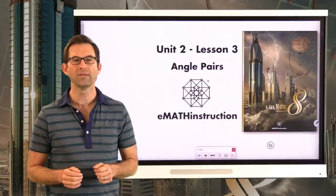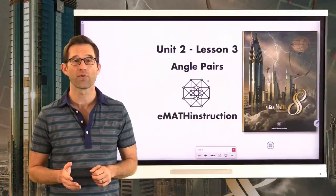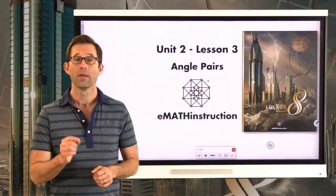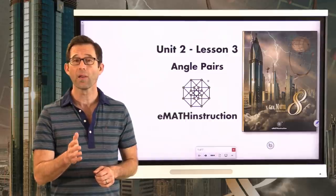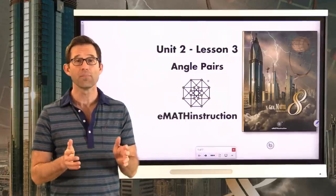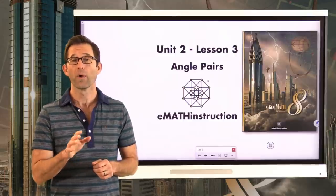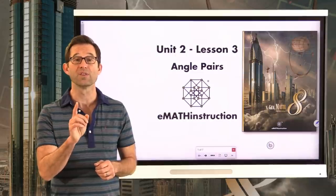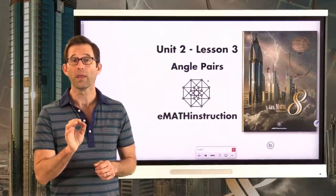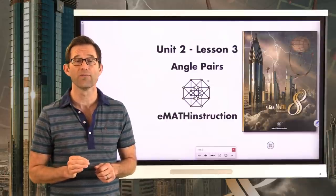Hello and welcome to another NGen Math 8 lesson by EMath Instruction. My name is Kirk Weiler and today we're going to be doing Unit 2, Lesson 3 on Angle Pairs. In the last lesson we defined what an angle was — two rays put together that have a common starting point. We also saw how to name angles, using that starting point as the vertex, either with a single letter or three letters. We're going to be using the three-letter convention a lot today.